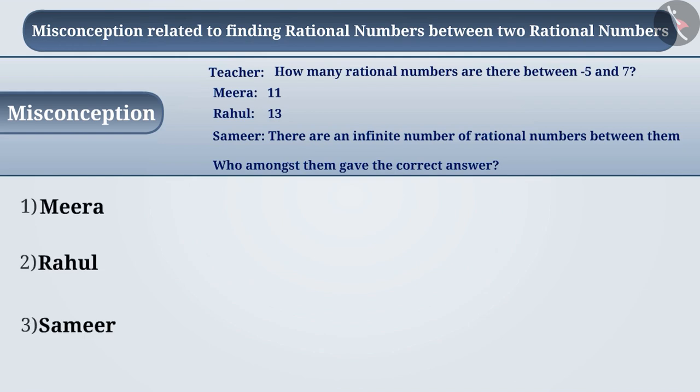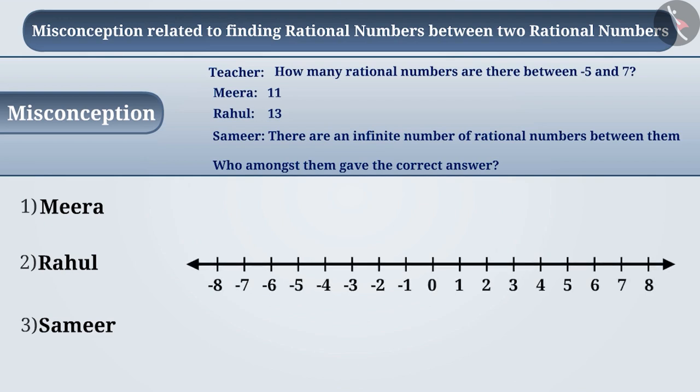Meera did not understand the question properly. Instead of finding rational numbers, she found out how many integers are there between minus 5 and 7. Since there are 11 integers between minus 5 and 7, she gave the answer as 11, hence option 1 is the wrong answer.